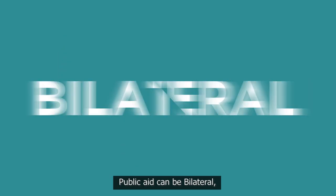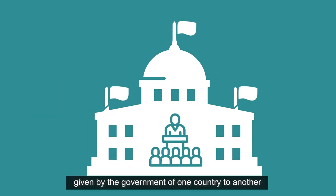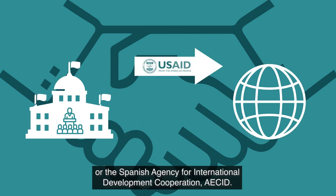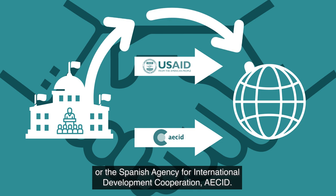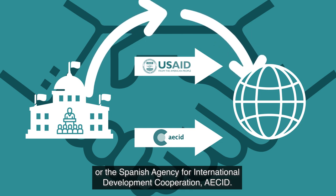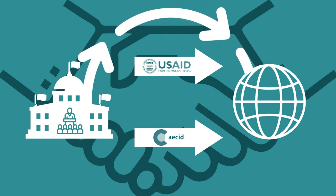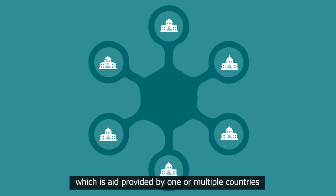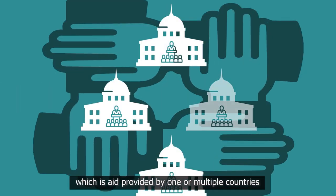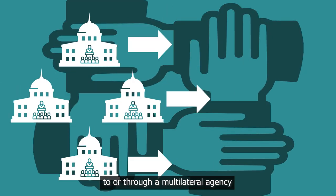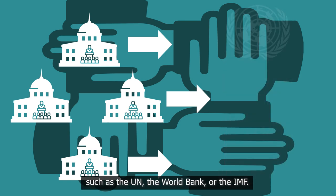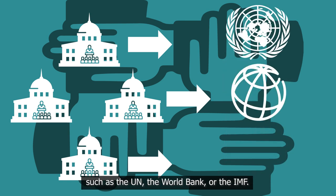Public aid can be bilateral, given by the government of one country to another — such as USAID or the Spanish Agency for International Development Cooperation. Public aid can also be multilateral, which is aid provided by one or multiple countries to or through a multilateral agency such as the UN, the World Bank, or the IMF.